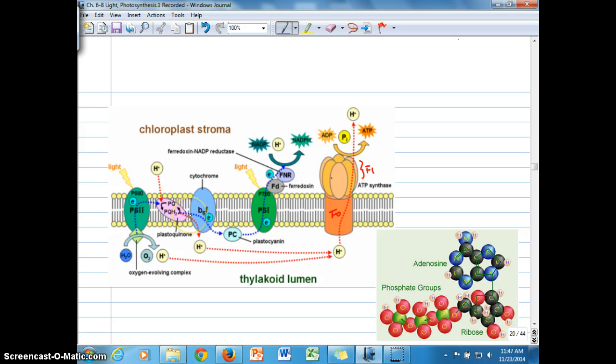If we look back at our overall diagram here on the left, we can see all the places where hydrogen ions are accumulating in the lumen. Things not included in this diagram include the Q-cycle and cyclic electron flow. But ultimately these different hydrogen ions accumulate and are used by the ATP synthase to produce ATP.